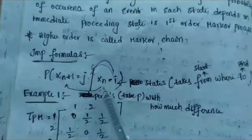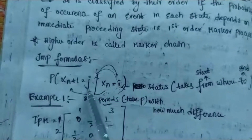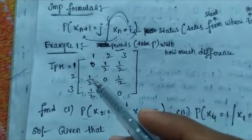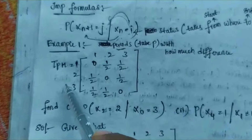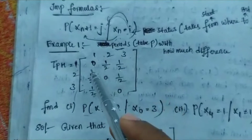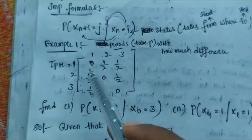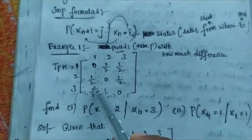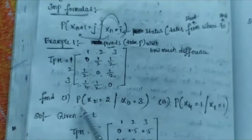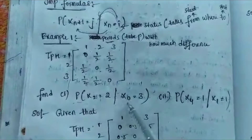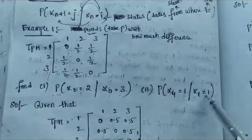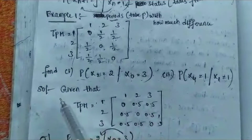Here Xn+1 and Xn indicate periods, and i and j indicate states. Let us consider an example problem. The given transition probability matrix has rows and columns 1, 2, 3 with elements: 0, 1/2, 1/2 / 1/2, 0, 1/2 / 1/2, 1/2, 0. We are asked to find P(X2=2 | X0=3) and P(X4=1 | X1=1).